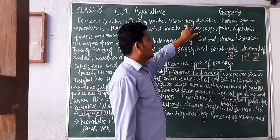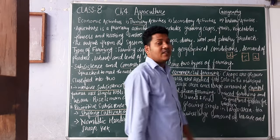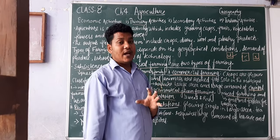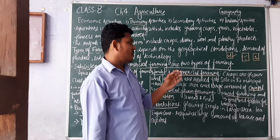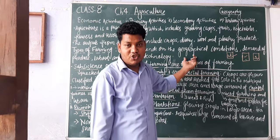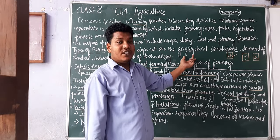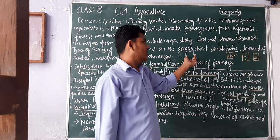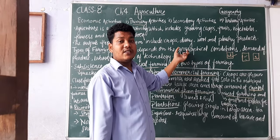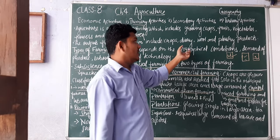Now, what are tertiary activities? Tertiary activities include providing goods and services. When we buy things from a market or a shop, they are providing services — that comes under tertiary activity. Banking, hospitals, and restaurants all provide hospitality and services, so they fall under tertiary activities.